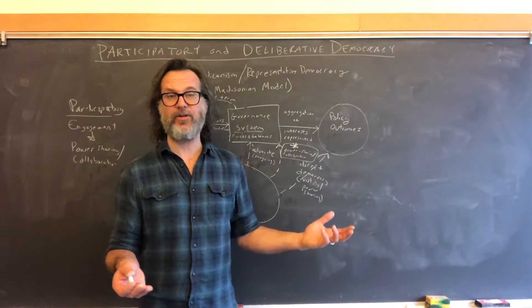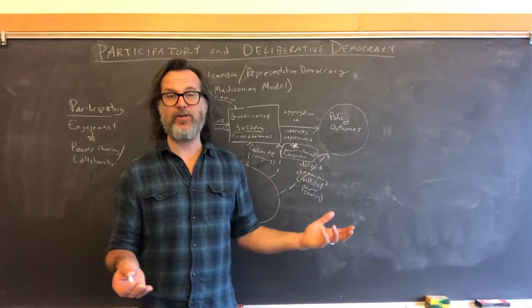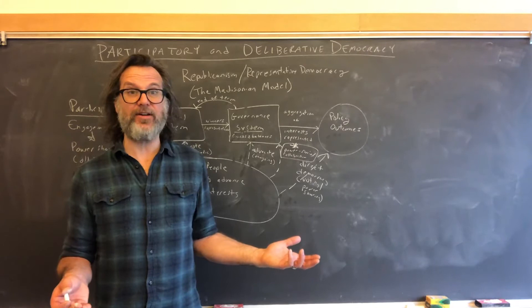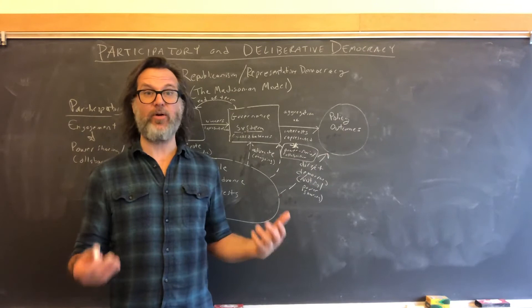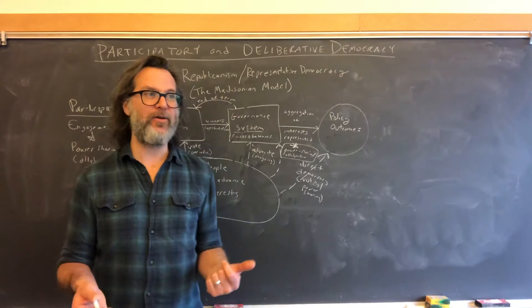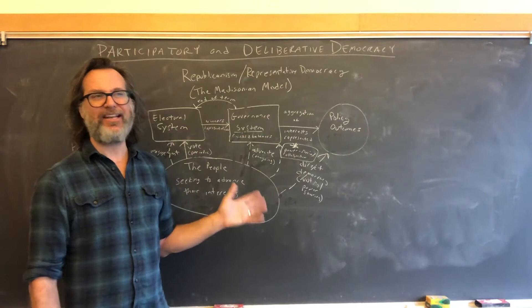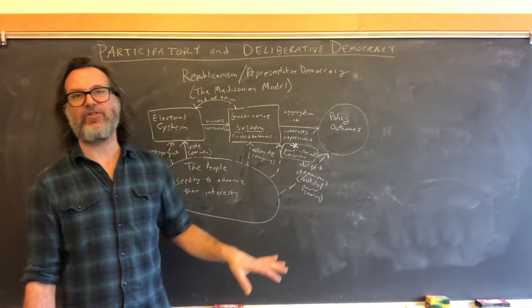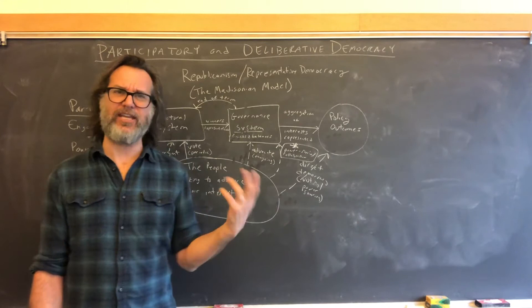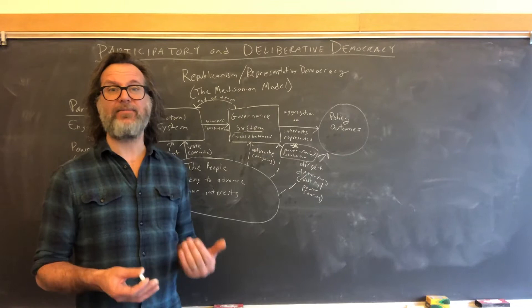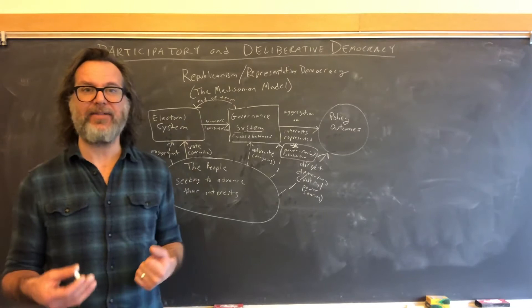Participatory democracy means putting into regular life, on an ongoing basis, opportunities for people to get involved beyond just voting or lobbying. The idea is that this will promote greater engagement. We can promote engagement culturally by saying people ought to get more involved, but participatory democracy also asks us to add organizations and institutions — quasi-governmental or outside of government — that increase the power-sharing mechanisms in our democratic system, and that will have a feedback loop on engagement.